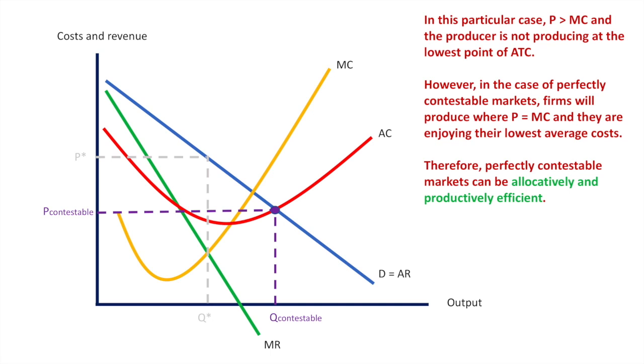Bear in mind though that a perfectly contestable market exists in theory, but a real world example is hard to find. The most commonly cited example in the study of economics is the budget airline industry. This is due to the relative ease of starting a budget airline and the implications it has for larger airlines. I'll put a link to an article about this in the video description.